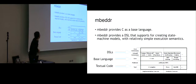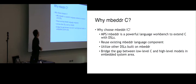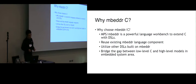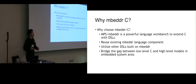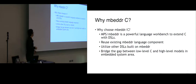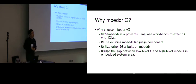Embedder really provides DSLs that support creating state machine models with relatively simple execution semantics. So the question comes: why do we choose Embedder and why do we choose C as a platform? MPS Embedder is a powerful language workbench to extend C with DSLs. It allows us to reuse existing embedded language components such as C expressions, which would significantly reduce our implementation complexity. And at the same time, we can utilize other DSLs built on Embedder. For example, if we define containers that use C expressions, we can also use language components that define other DSLs that inherit C expressions. The final requirement is the need to bridge the gap between low-level C and high-level state machine models in embedded existing areas.